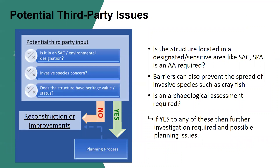The first thing to consider is potential third party issues. We look at a series of items that may change the course of the process. Is the barrier located in a sensitive environment that may require an appropriate assessment under the Habitats Directive? Are there any issues with the spread of invasives? For example, removing a barrier may increase the spread of something like the crayfish plague if it is present, so an ecological assessment may be required. Is the site important from an archaeological perspective? If the answer to any of these questions is yes, then a planning process may be necessary.